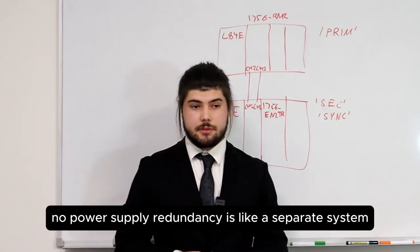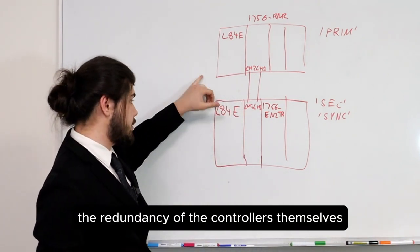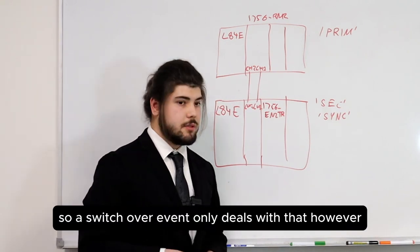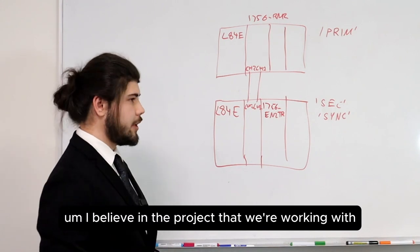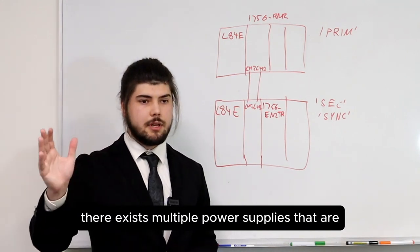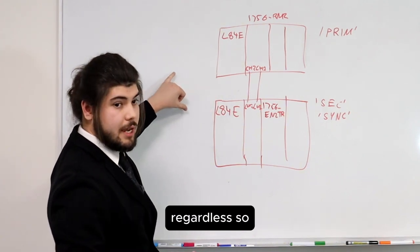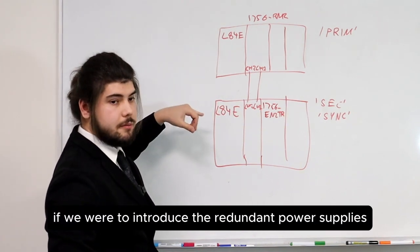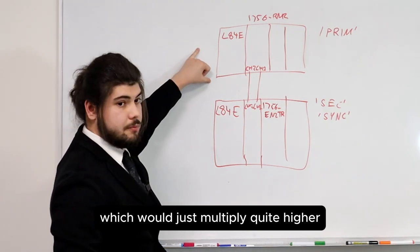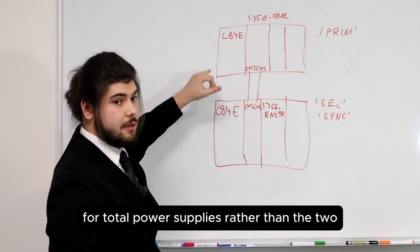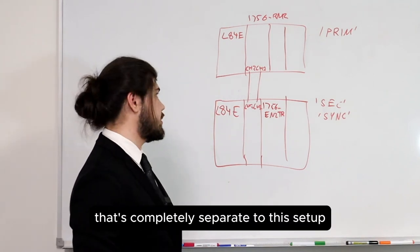Power supply redundancy is a separate system with a separate manual. This presentation is just dealing with redundancy of the controllers themselves. A switchover event only deals with that. In the project we're working with, there exist multiple power supplies supplying both PLCs and both racks separately. If redundant power supplies were introduced, you'd have two power supplies per PLC — four total rather than the two which already exist and are in themselves redundant. That's completely separate to this setup.